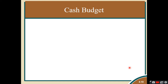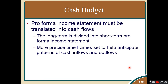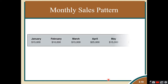The cash budget is needed to determine how much cash or funds are needed to cover all items used in current operations, considering both long-term and short-term items and the timing of inflows and outflows. Assuming a monthly sales pattern for the first six months: $15,000, $10,000, $15,000, $25,000, $15,000, and $20,000.